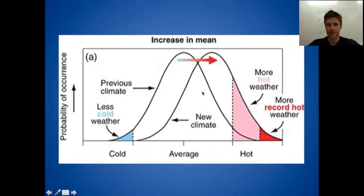Just to illustrate that, this is a schematic diagram where we're showing the distribution of temperature in some location where you have most of the occurrences of temperature right near the average, and then you have a bell curve where you have less and less occurrences at extreme cold and less and less occurrences at extreme warmth.